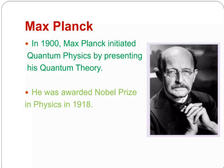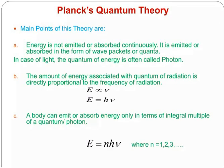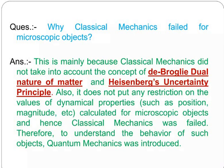Max Planck, in 1900, initiated quantum physics by presenting his quantum theory. He was awarded Nobel Prize in physics in 1918. Planck quantum theory main points: Energy is not emitted and absorbed continuously. It is emitted or absorbed in the form of wave packets or quanta. In case of light, the quantum of energy is often called photon. The amount of energy associated with the quantum of radiation is directly proportional to the frequency of radiation: E is directly proportional to frequency, E equals h nu. A body can emit or absorb energy only in terms of integral multiple of quantum or photon: E equals n h nu, where n equals 1, 2, 3.